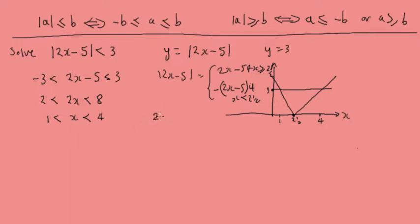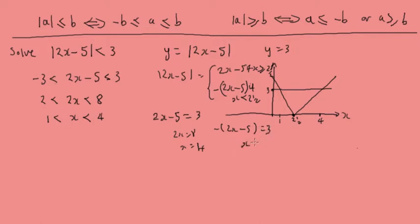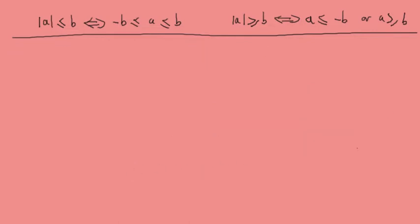Because if we solve 2x minus 5 equals 3, we get 2x equals 8, so x equals 4. And solving minus(2x minus 5) equals 3 gives x equals 1. So our intersection points are x equals 1 and x equals 4, which matches our algebraic solution. That's our first example.